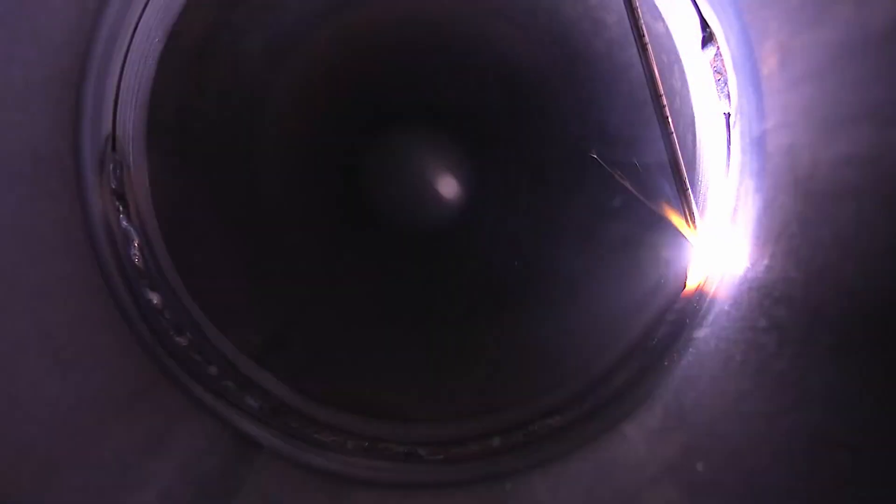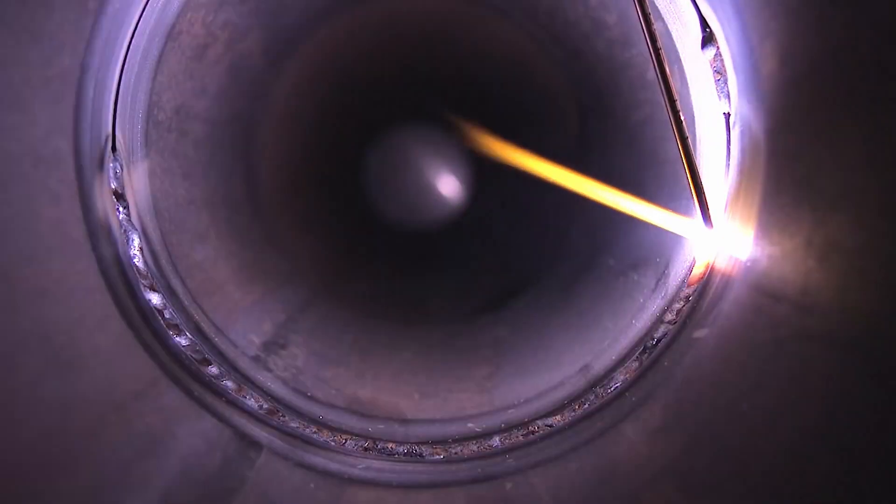And again my torch is going side to side but I'm trying to keep that filler metal right there in the center where the root opening is. Up here I'm starting to get vertical, starting to get into a bad position again.